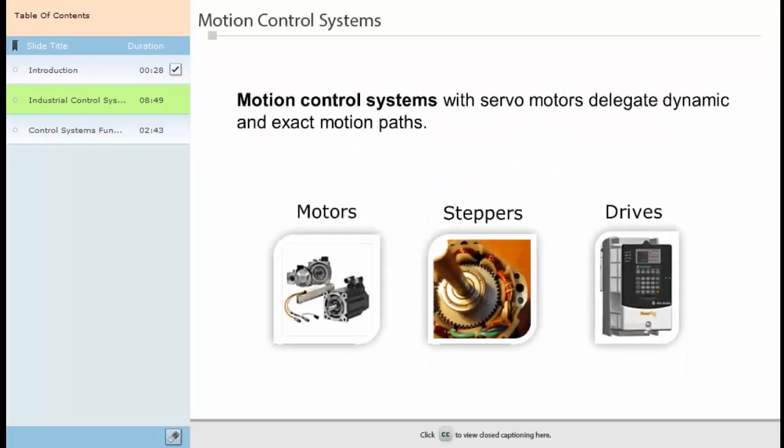If you think about an automated industrial control system, you may picture boxes moving along belts or products being processed before they are packaged and delivered. All that movement is created by motion control systems. Motion control systems with servo motors delegate dynamic and exact motion posts. The components used to control motion include motors, which act as the muscle of a device, supplying power to moving parts by converting energy into movement. The most common motors found in motion control are AC and DC motors.